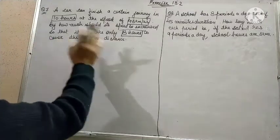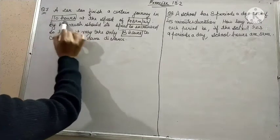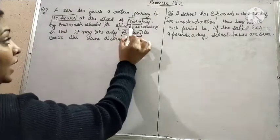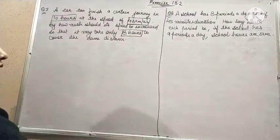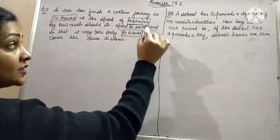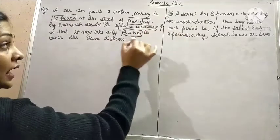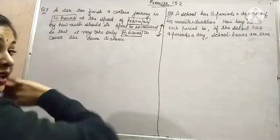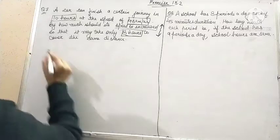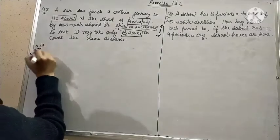But you can also think about it: it takes 10 hours at the speed of 48 km per hour. Now speed is to be increased and time decreases - that means it is a problem of inverse proportion. So, formulate the table.